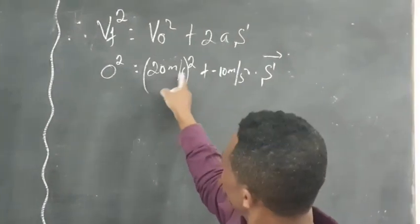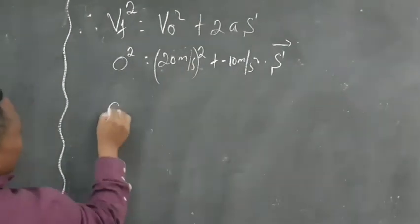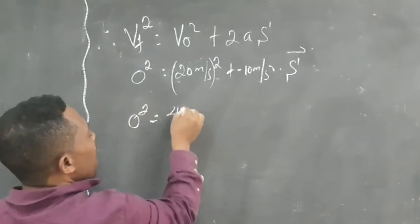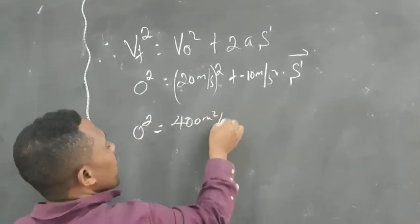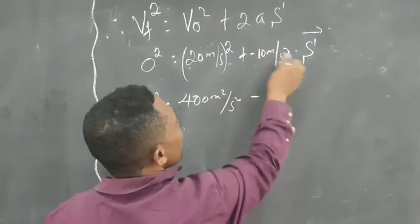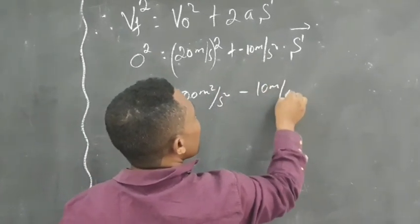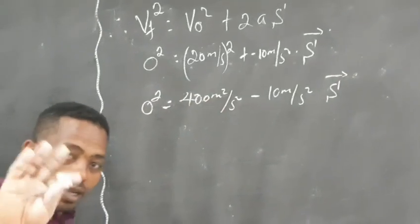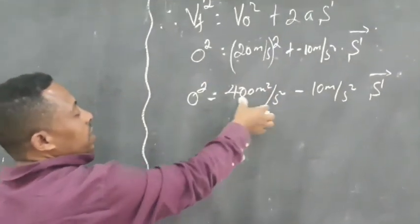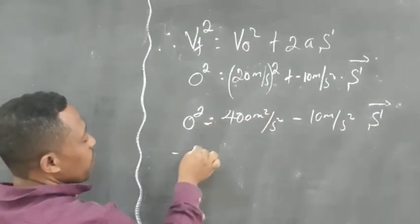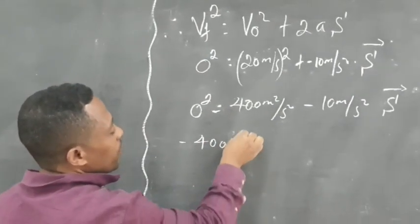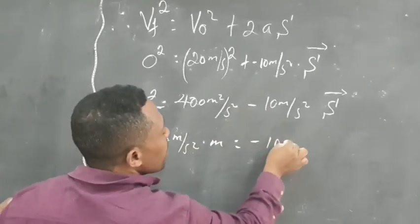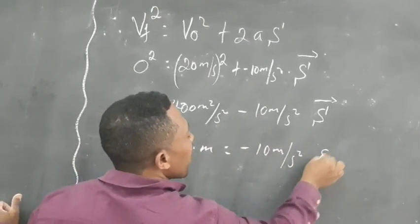And what we have to do is just square it. They are all squared, which is equal to 400 m squared per second squared minus 10 m per second squared times S. Now just rearrange, and then it becomes 400 meter per second squared, and then which is equal to 10 m per second squared times S.